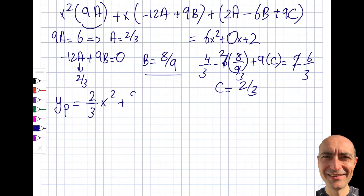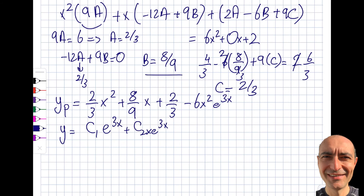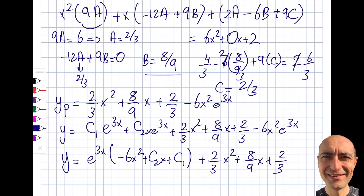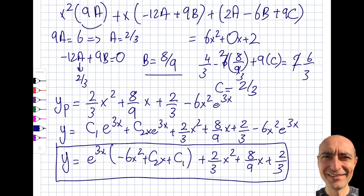So yp equals (2/3)x² + (8/9)x + 2/3 minus 6x²·e^(3x). The full general solution incorporates yc as well: y = c1·e^(3x) + c2·x·e^(3x) + (2/3)x² + (8/9)x + 2/3 minus 6x²·e^(3x). We can factor the e^(3x) terms together: e^(3x)·(−6x² + c2·x + c1) plus the polynomial. This was a fairly comprehensive segment — have a good day, I'll catch up with you soon.